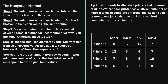Let's jump into an example. A print shop needs to allocate four printers to four different print jobs, where each printer has a different number of hours it takes to complete different jobs. Assign each printer to one job so that the total time required to complete the jobs is minimized. Looking at the matrix, printer one takes six hours to complete job one, five hours for job two, 17 hours for job three, and seven hours for job four. Our goal is to assign each printer to one job and minimize total time.